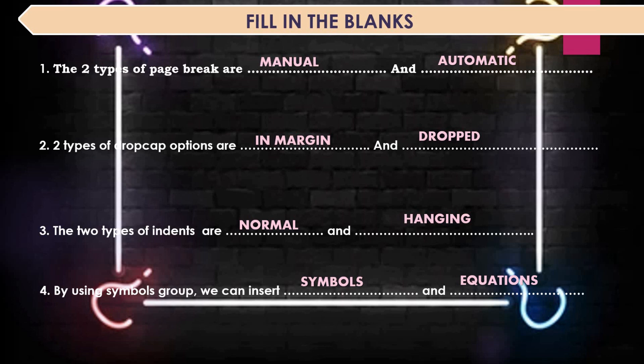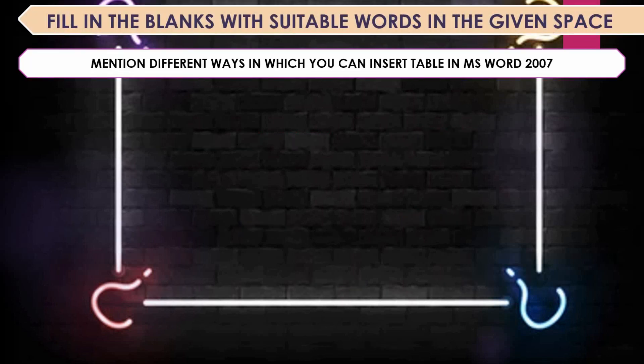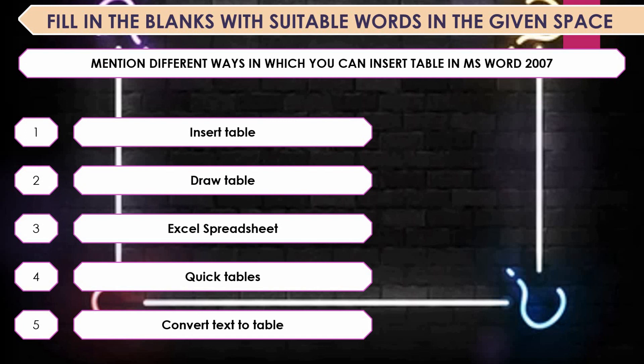Mention the different ways in which you can insert a table in MS Word 2007. The answers are: Insert Table, Draw Table, Excel Spreadsheet, Quick Tables, and Convert Text to Table.